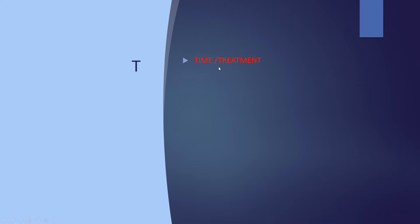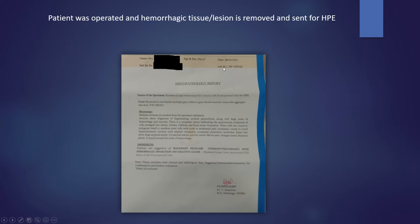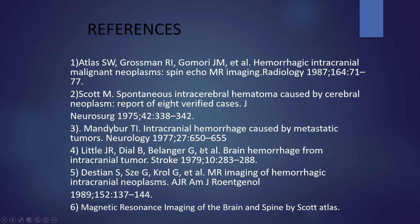Additionally, consider time and treatment: always follow up the case. If there is no decrease in lesion size and non-resolving edema even after follow-up and treatment, definitely suspect a neoplastic lesion with hemorrhage rather than a benign bleed. The patient was operated, and the hemorrhagic tissue was sent for histopathological analysis. HPA came back as malignant neoplasm, primary or secondary, with hemorrhagic infarction and reactive changes, with immunohistochemistry suggested for further evaluation. These are the references used.